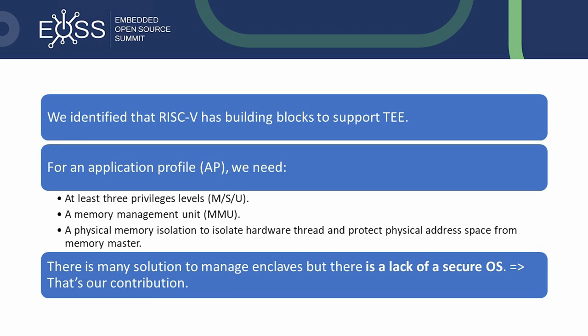The RISC-V implementation may provide the following combinations: a core with only M mode for simple embedded systems, MU for secure embedded systems, and MSU for systems running a rich OS such as Linux or Android.